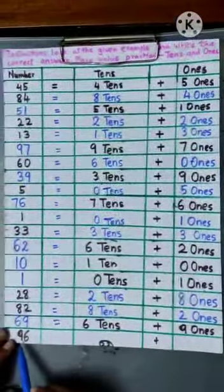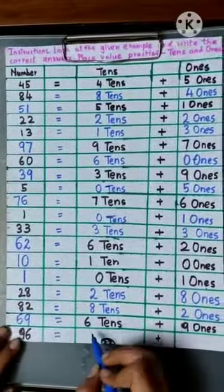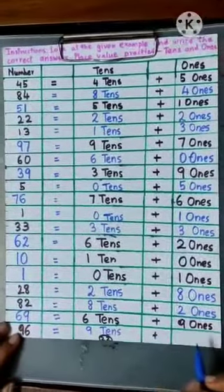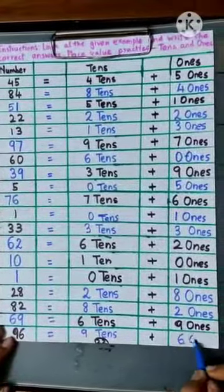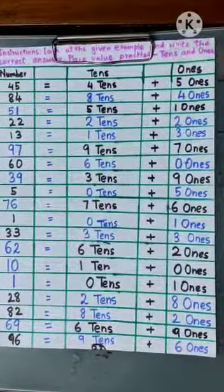In our last question we can see there is 9 and 6, so there would be 9 tens and 6 ones. And page number 22 is completed over here. Thank you.